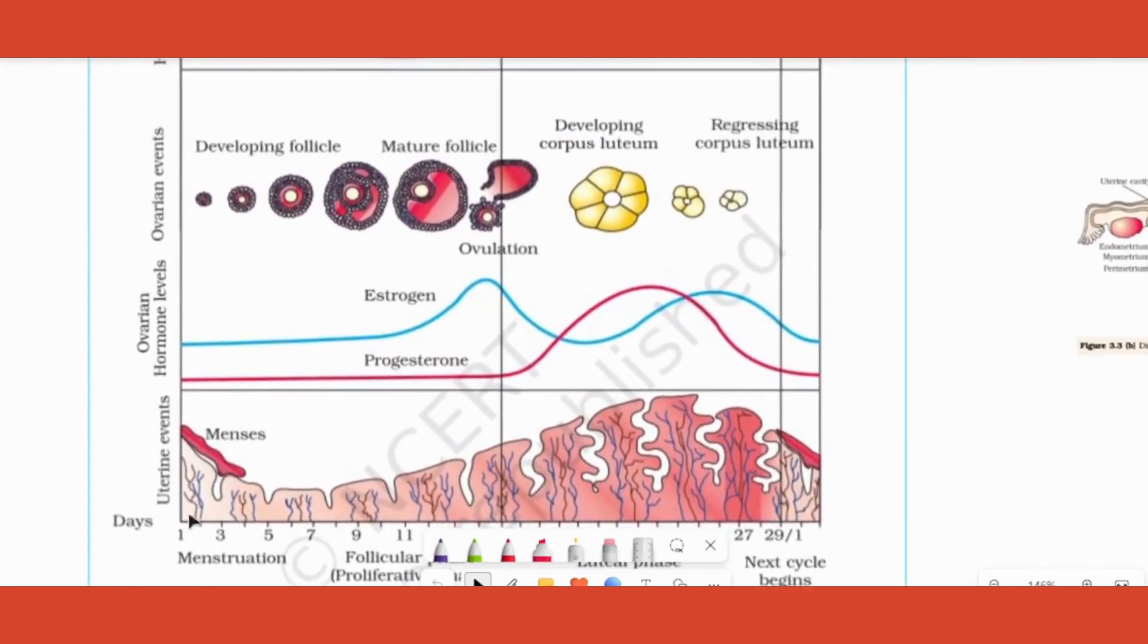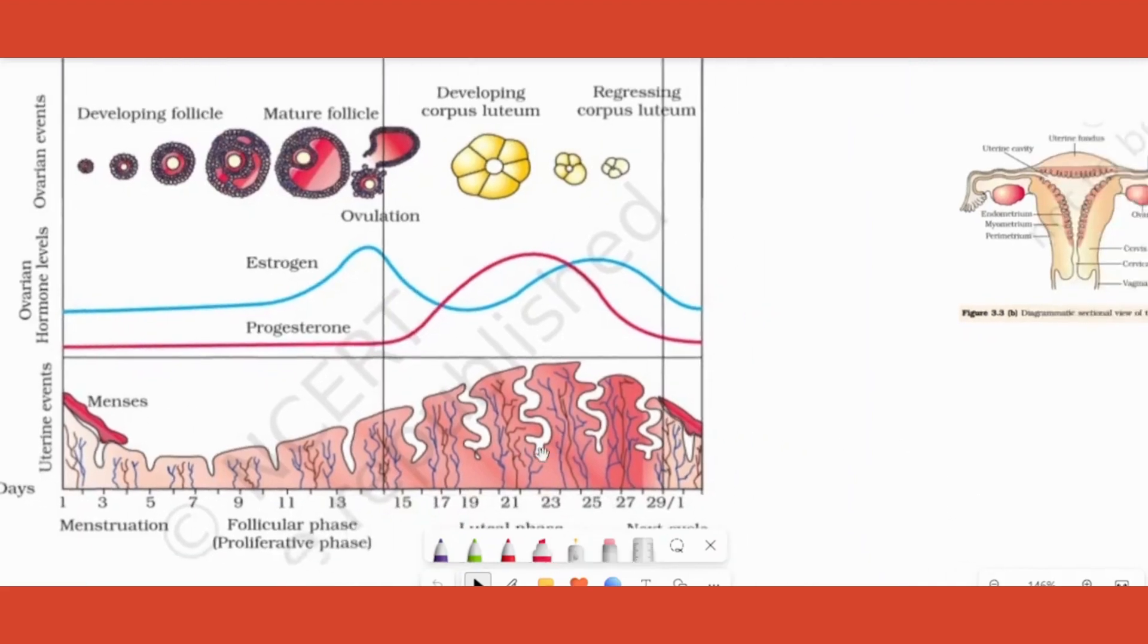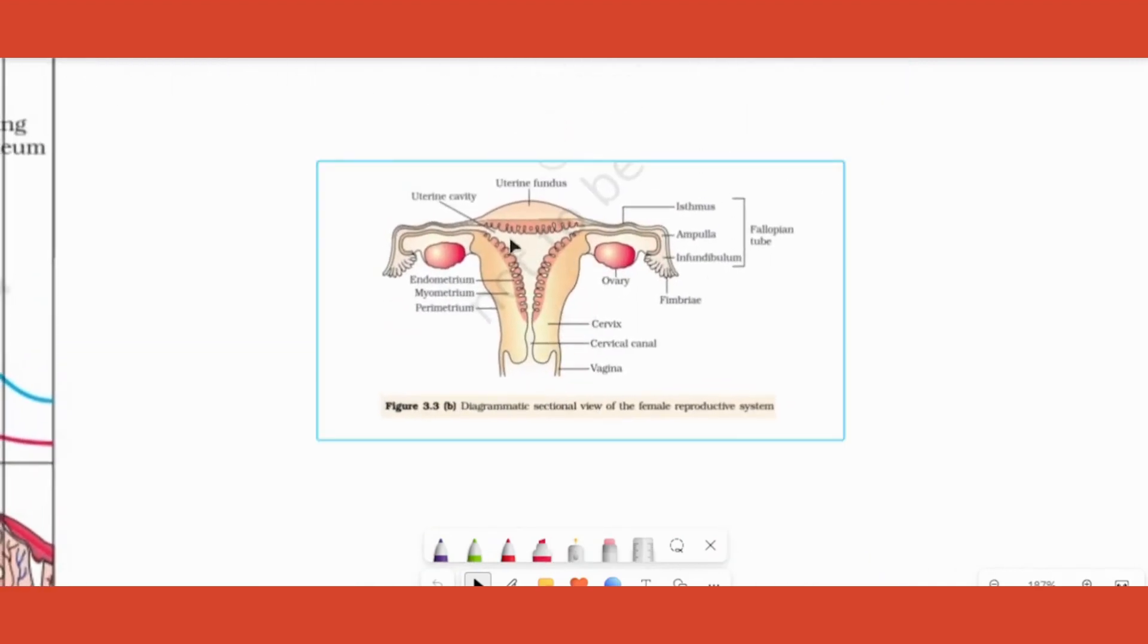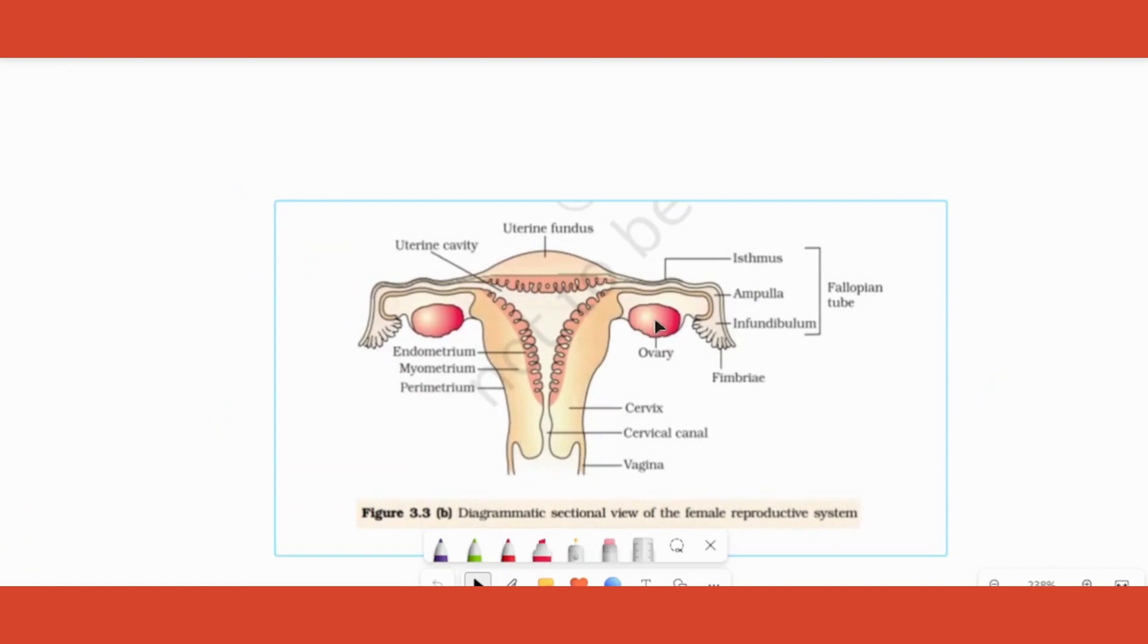Day one, the endometrium lining is shedding. Day one, this keeps on happening till probably day five, and that phase is called as the menstrual phase. Then comes follicular phase or proliferatory phase. So two events are happening: one in the uterus, another in the ovary.